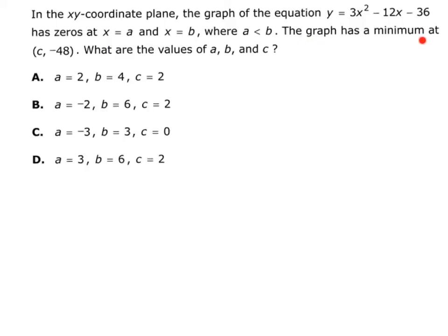The graph has a minimum at the point (c, -48). What are the values of a, b, and c? Okay, so first let's talk about zeros of a function are the same thing as solutions.